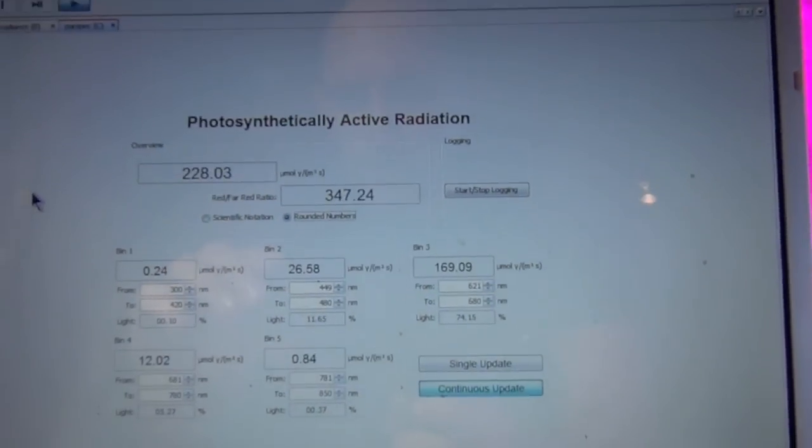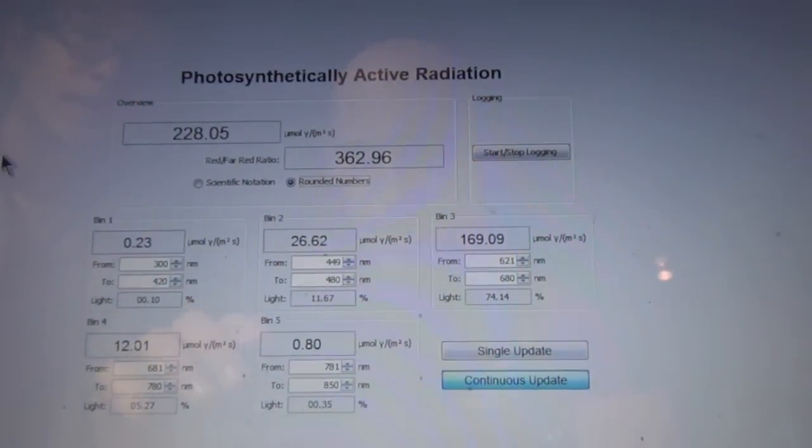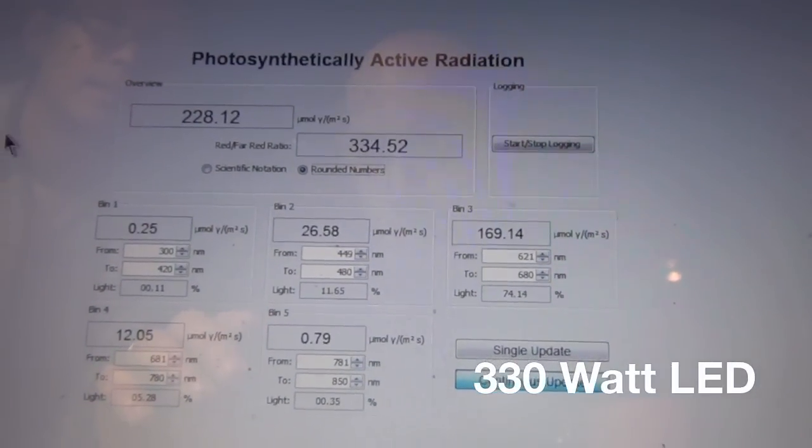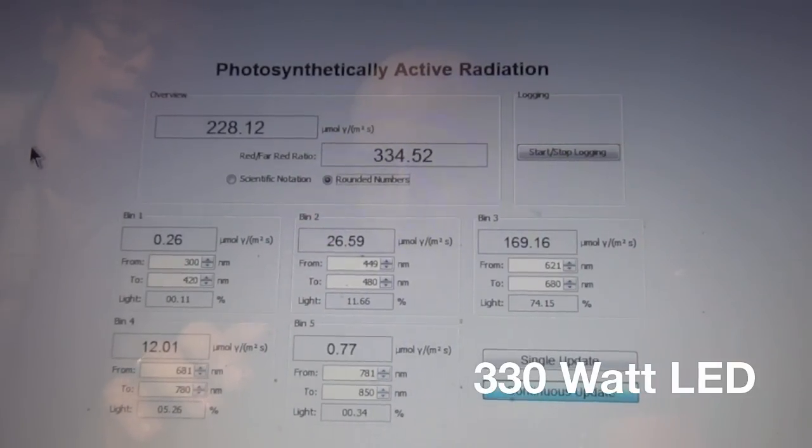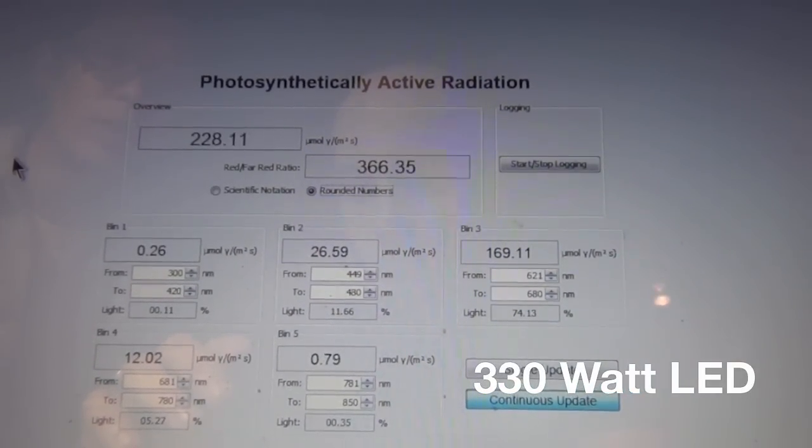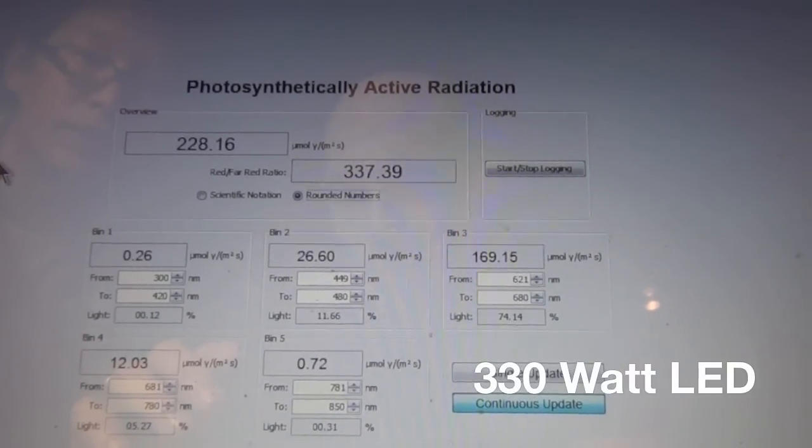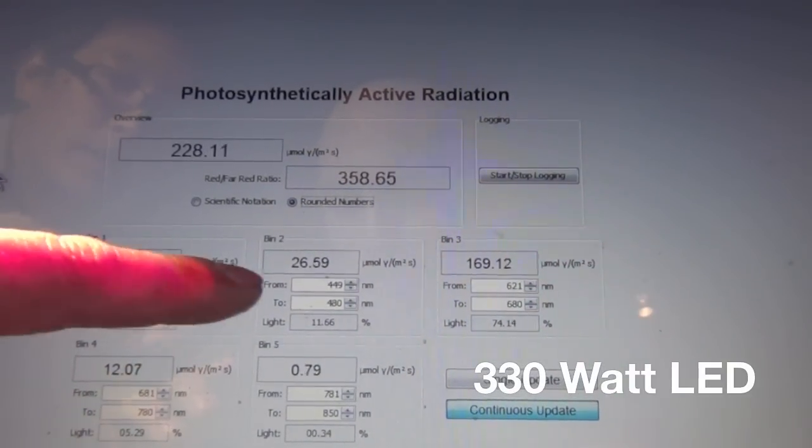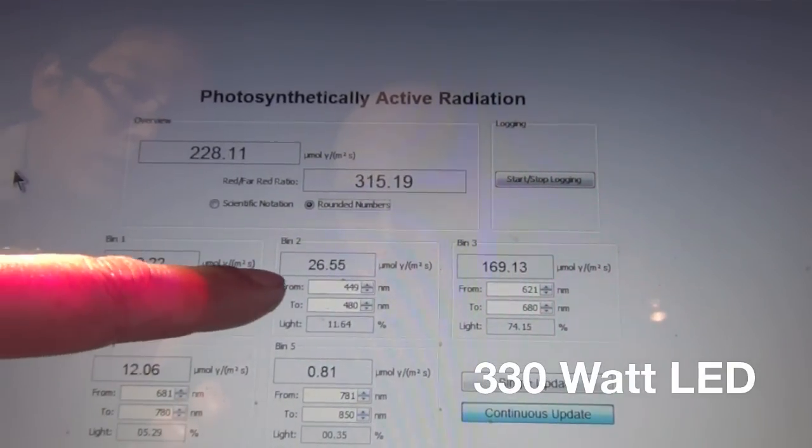Here we have our Lumigro ES-330 running full power. We're looking at the photosynthetically active radiation output of our light broken down by wavelength. I want to show you bin 2 and bin 3, that's blue and red.